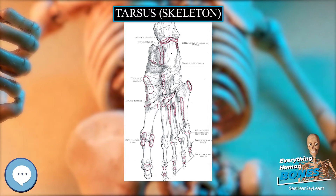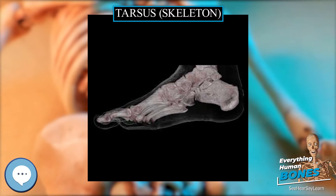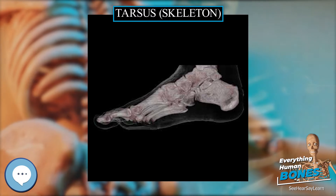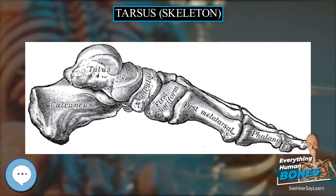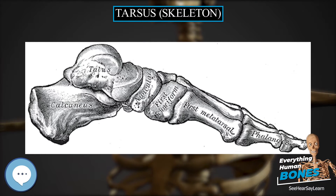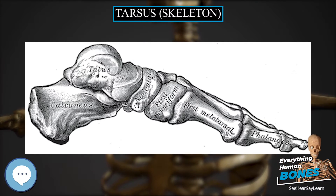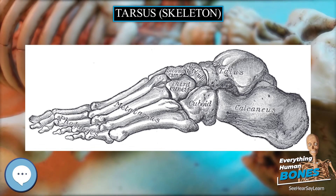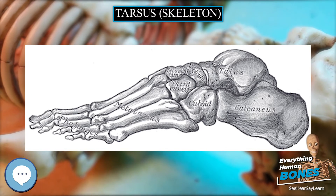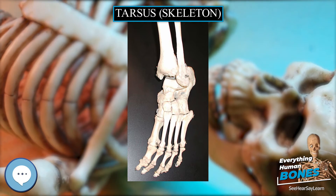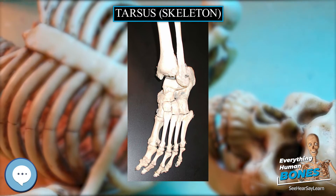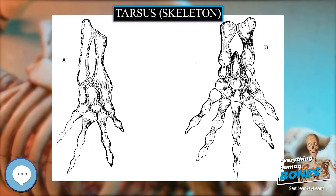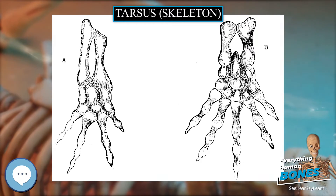However, together the subtalar facets form a screw or Archimedean spiral — right-handed in the right foot — about which subtalar motion occurs. During subtalar inversion, the calcaneus also rotates clockwise and translates forward along the axis of the screw. Average subtalar motion is 20 to 30 degrees inversion and 5 to 10 degrees eversion. Functional motion during the gait cycle is 10 to 15 degrees.